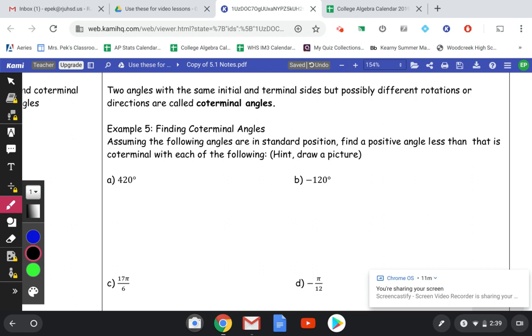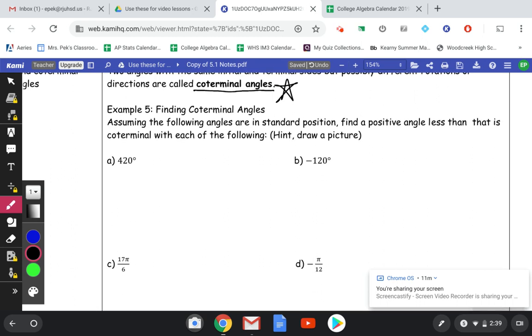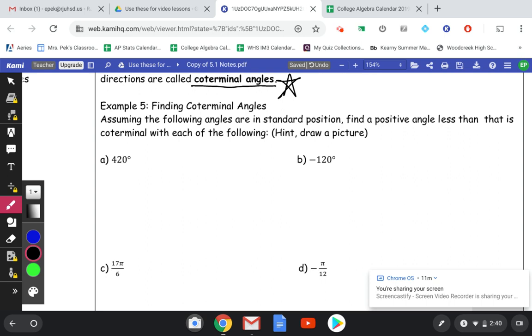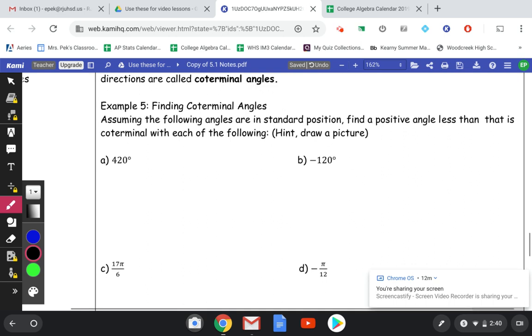Last page. So two angles with the same initial and terminal sides, but possibly different rotations or directions are called co-terminal angles. This is going to be important for you guys to practice. So finding co-terminal angles means I'm going to take the angle I'm given, and I'm going to find another angle in the exact spot, but maybe a different rotation. So for example, where is 420 degrees? Well, if you notice, 420 degrees is more than one rotation. So I can find a co-terminal angle by taking the rotation out of it. If I take 420 minus 360, if I subtract an entire rotation, 420 minus 360 is going to be 60 degrees. This would be a co-terminal angle.